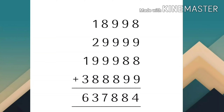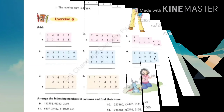8+3=11, 11+9=20, 20+9=27, 27+8=37 - 7 carry 3. 3+1=4. इसी तरीके से आप इस process को complete कर लोगे।